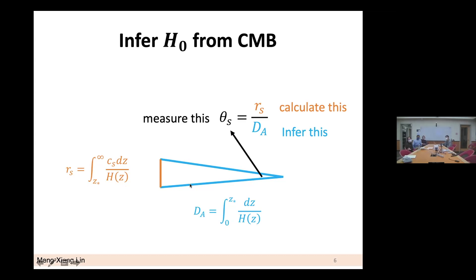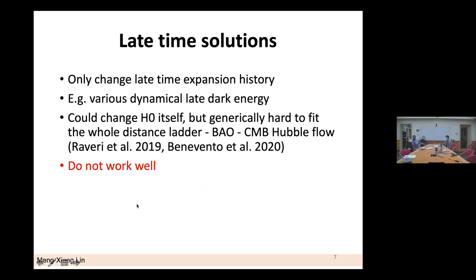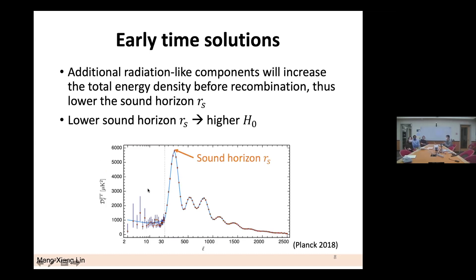From this framework, there are generally two types of solutions. Late-time solutions only change the late-time expansion history, for example through dynamical dark energy models. These can change the H0 value itself, but it's very hard to fit the whole distance ladder from BAO to CMB simultaneously, so late-time solutions generally don't work well. Early-time solutions can, in principle, also change the sound horizon — so let me focus on those.